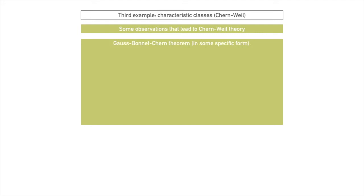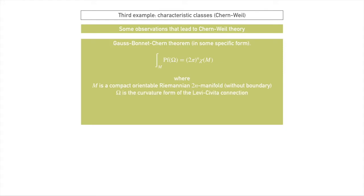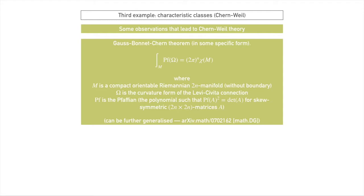One way of stating the Gauss-Bonnet-Chern theorem is that we can recover the Euler characteristic by an integral, just in a slightly more general case. If we take some compact orientable Riemannian 2n-manifold — it's very important that we work in even dimension — without boundary, and we take the curvature form of the Levi-Civita connection, which is a connection on the tangent bundle, and take the Pfaffian of the curvature form (the Pfaffian is just some polynomial that satisfies a nice property), and integrate it, then we can recover our Euler characteristic up to a factor of 2πn. You can actually generalize this further to almost arbitrary bundles with arbitrary connections.